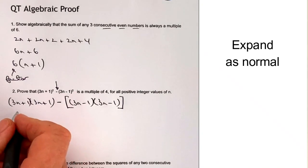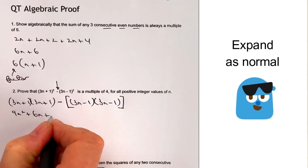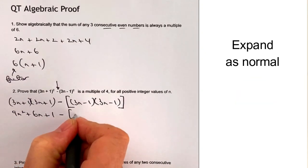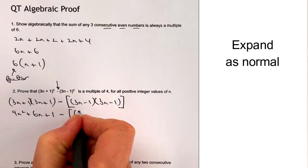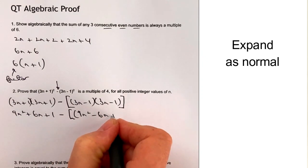So we've got 3n times 3n is going to be 9n squared plus 6n plus 1 minus, and again, big square brackets, and I've got 9n squared minus 6n plus 1 again.